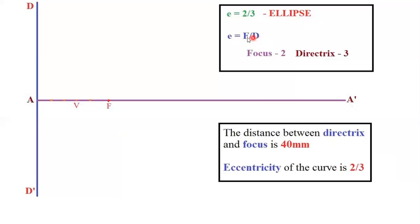If the eccentricity ratio is less than 1, we get an ellipse. If it is equal to 1, we get a parabola. If it is greater than 1, we get a hyperbola. Try to remember these three concepts.